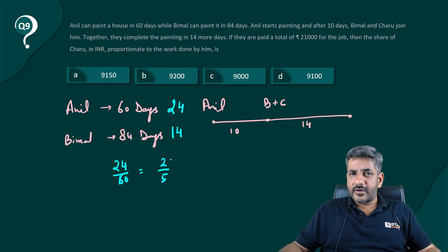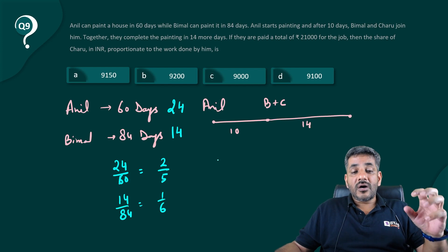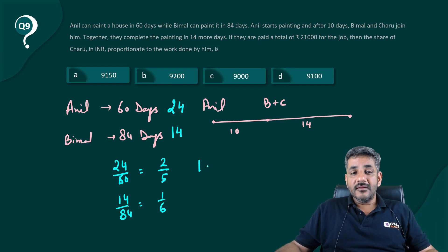Bimal can do the job in 84 days but he has worked for 14 days. How much work has he done? 14 by 84, that is 1 by 6 of the work.